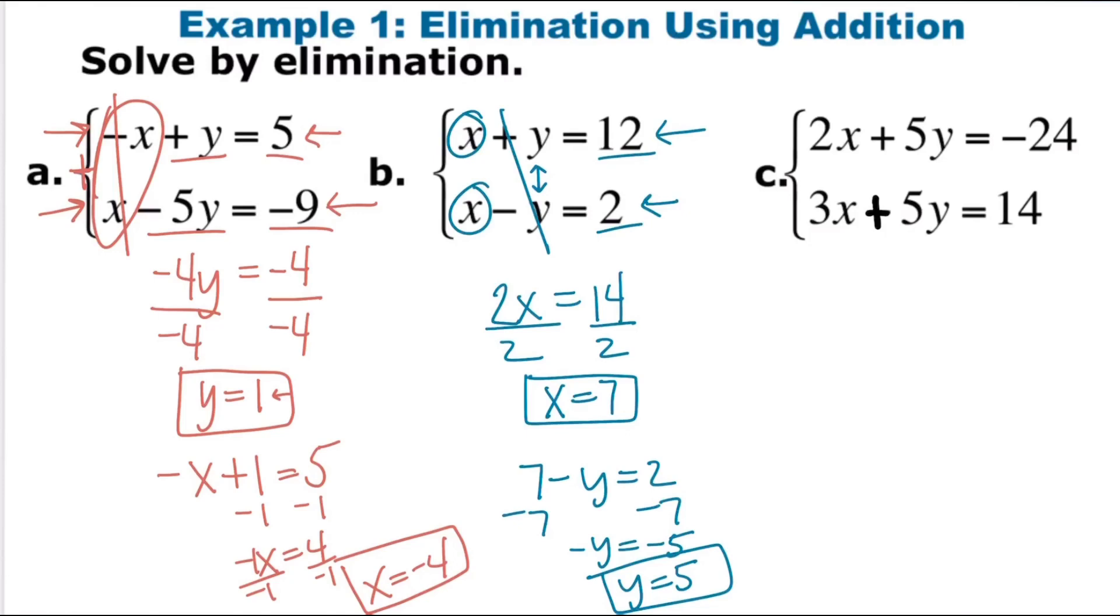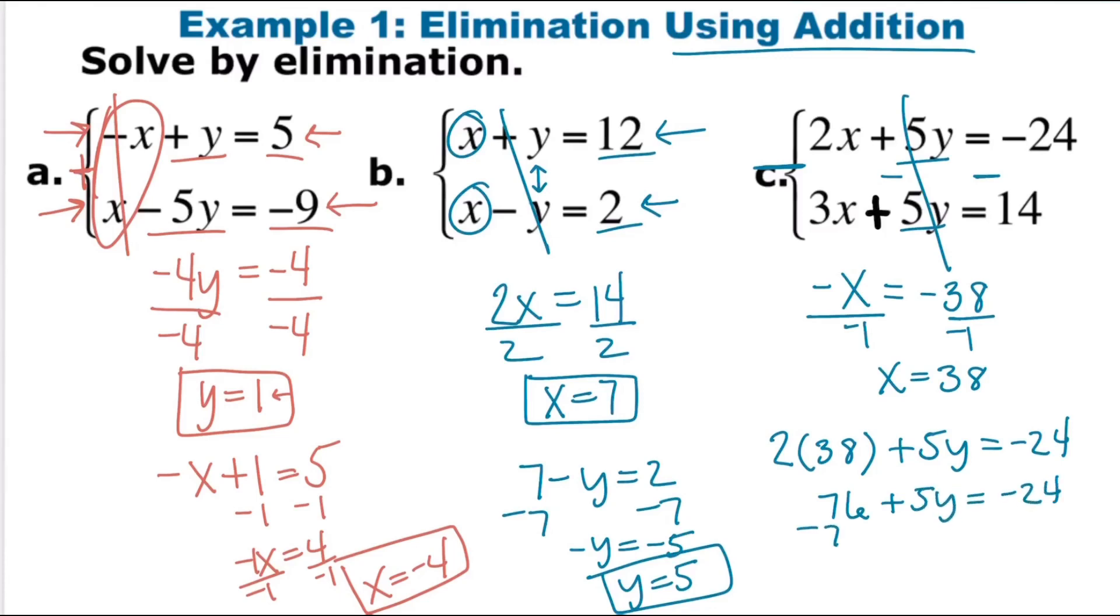Lastly, I changed c a little bit because this is using addition, but you can also use subtraction. So instead of adding them like we just did, we can just subtract the whole thing. Since a positive 5y and a positive 5y would get us 10y if we added them, so we're going to subtract them so they cancel out. 2x minus 3x would get us a negative x or negative 1x. And then remember, we're subtracting, so 5y minus 5y, those are going to cancel. And then negative 24 minus, don't forget we're subtracting, minus 14 would get us negative 38 divided by negative 1 to get x is 38.